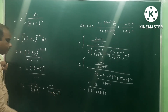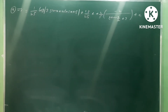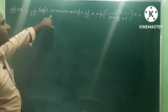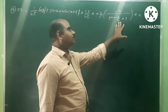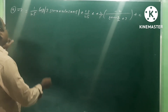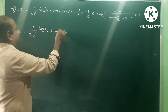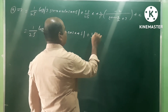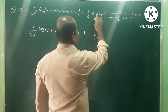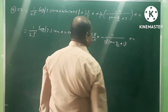Back-substituting t = tan(x/2): the third integral = −2/(tan(x/2) + 3). Therefore the final answer is: (1/25)·log|3sinx + 4cosx + 5| + (18/25)·x + (2/5)·(−2/(tan(x/2) + 3)) + C, which simplifies to (1/25)·log|3sinx + 4cosx + 5| + (18/25)·x − 4/(5(tan(x/2) + 3)) + C.